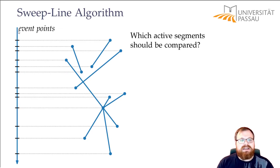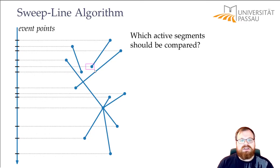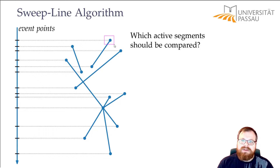We get an event point for every segment: for the topmost point and for the bottommost point. So we have to do something when the sweep line gets to the segment and when the sweep line leaves the segment.